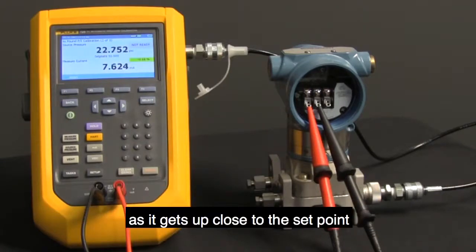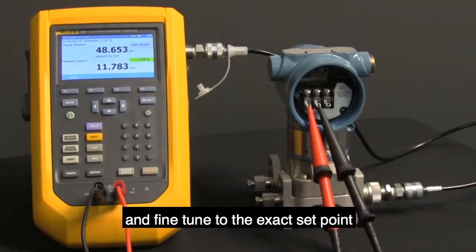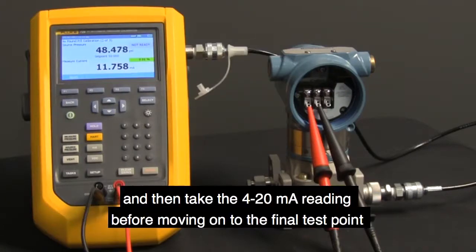As it gets up close to the set point, you'll notice the pressure will stop and then the automatic regulator will kick in and fine-tune to the exact set point. Hold on to it for the three second delay we put in and then take the 4 to 20 milliamp reading before moving on to the final test point.